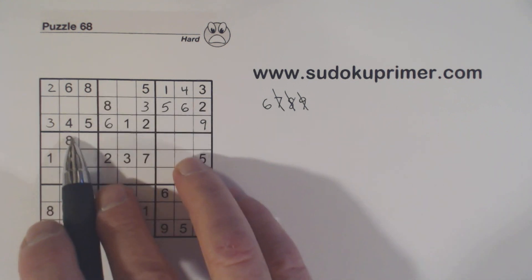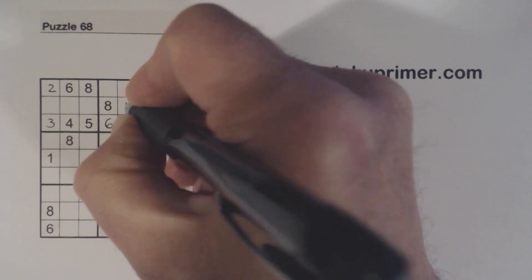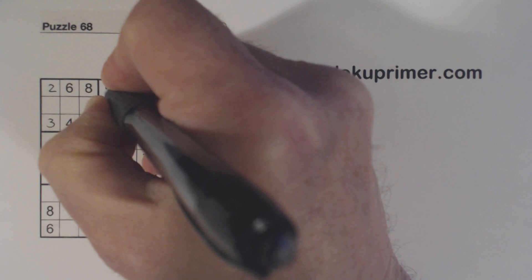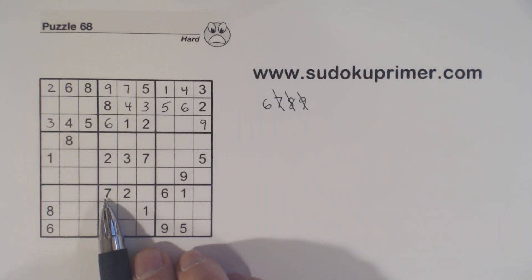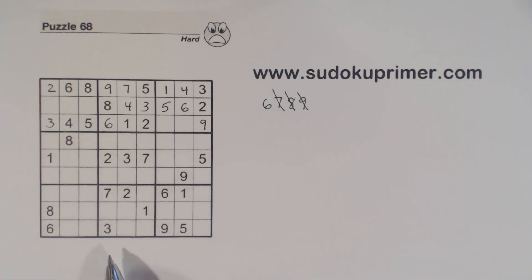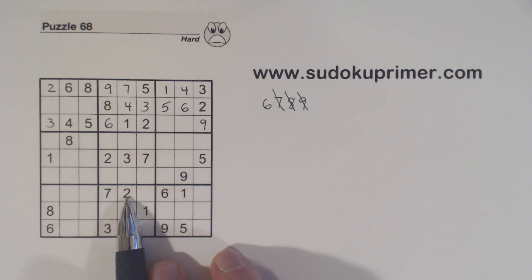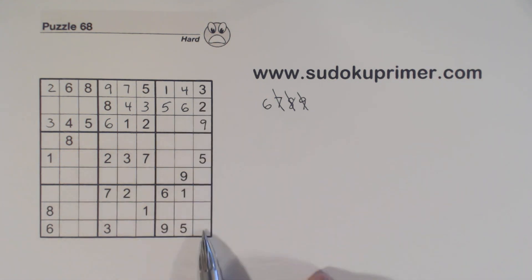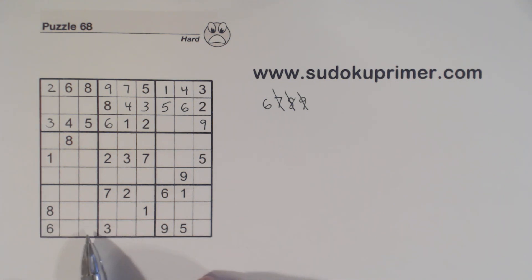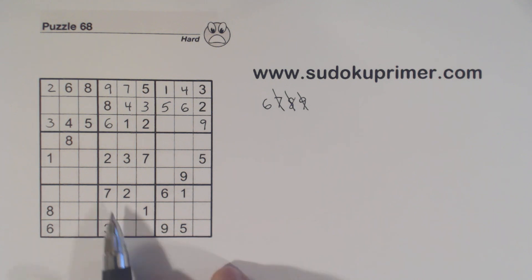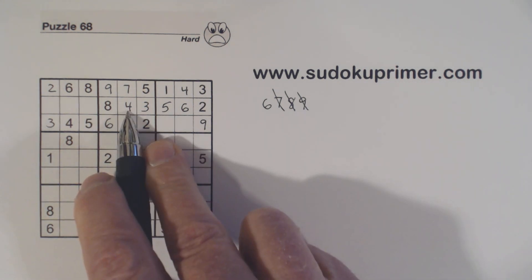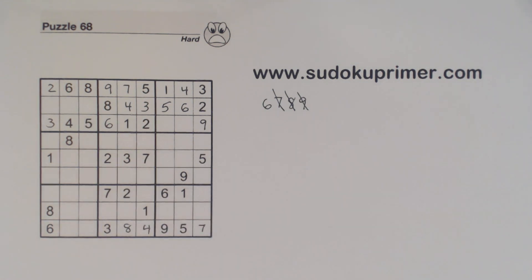Let's fill in some more numbers. We have a 4 here, 4 here, so that's a 4. We're missing 7 and 9 there, and we can solve them because of that 7. Now let's look at row 9. We've got a 1 here and a 1 here, so one of these is a 1. We've got a 2 here and ghost 2s because of the 2-3 twins, so these are 1-2 twins. We're missing 4, 7, and 8. There's a 7 there, so neither of those can be a 7 — so we know that's a 7 right there. These are 4 and 8, so I can fill those in.